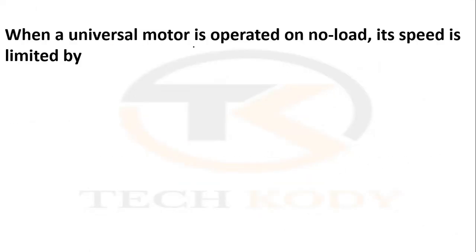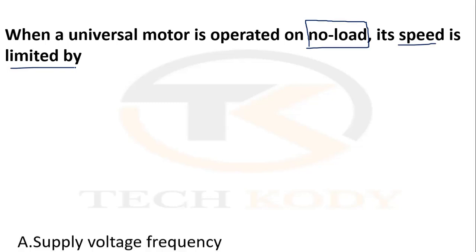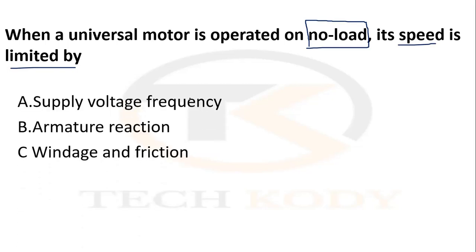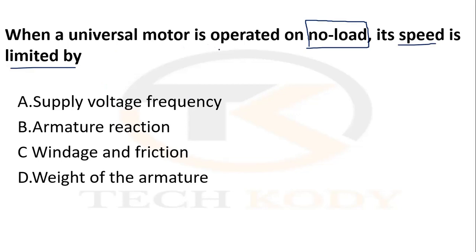When a universal motor is operated on no load, its speed is limited by: supply voltage frequency, armature reaction, or windage and friction / weight of the armature. The universal motor operated on no load will have its speed limited by windage and frictional losses.